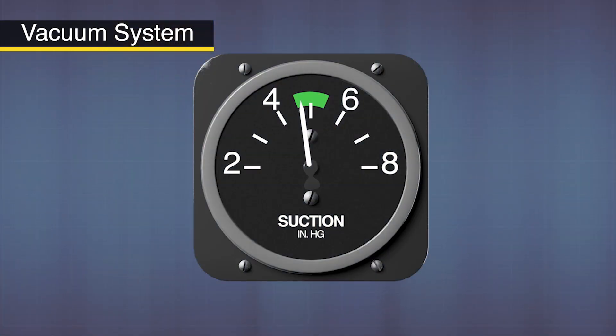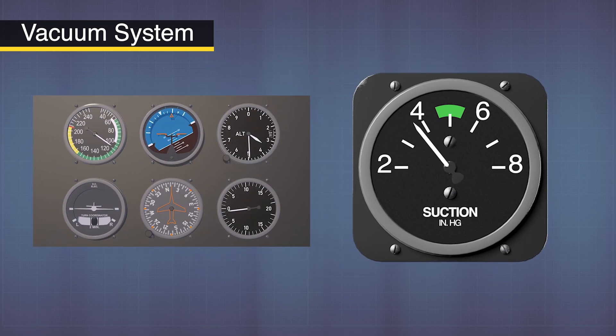Most vacuum powered instruments work with about 4-5 inches of mercury. Check your pressure gauge to make sure you have enough vacuum pressure. Know what your instruments require because anything less and your instruments will become unreliable.